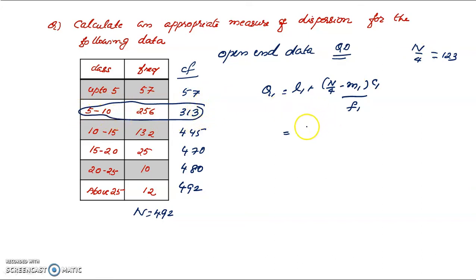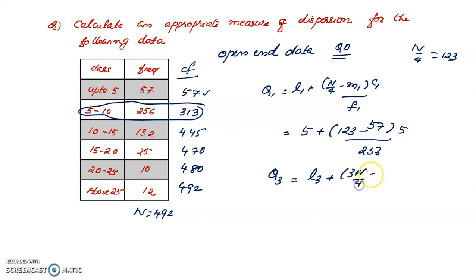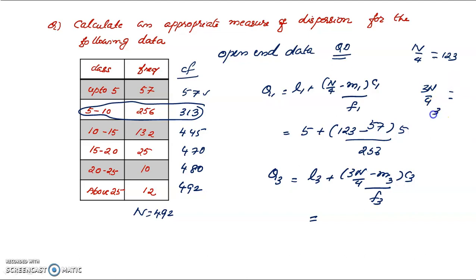We identify the Q1 class. Q1 equals L1 plus N by 4 minus M1, into C1, divided by the frequency, which is 256. For Q3, we use L3 plus 3N by 4 minus M3, into C3, divided by F3. We find 3N by 4 and identify the class. The 369th observation falls in the class; identifying that class gives us Q3 approximately 69, and the final answers are obtained from there.